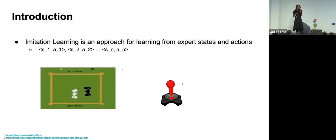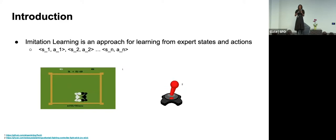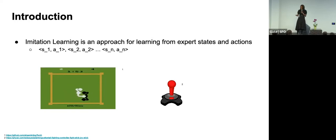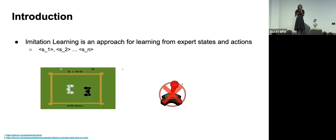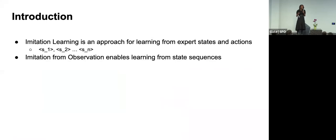In imitation learning, you have your states that you want to teach the agent, and you're saying when you're in this state, this is the action that you should take. But if we want to learn from things like videos, we typically don't have access to actions. So what I'm going to talk about today is how we can learn from imitation from observation, where we don't have access to actions — we're learning directly from states only. This is useful when we're learning from things like videos.